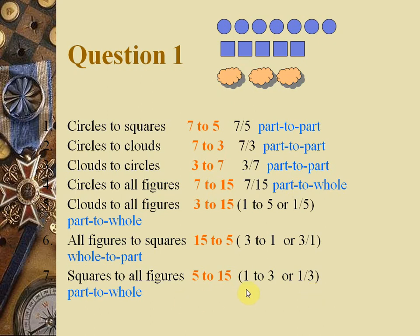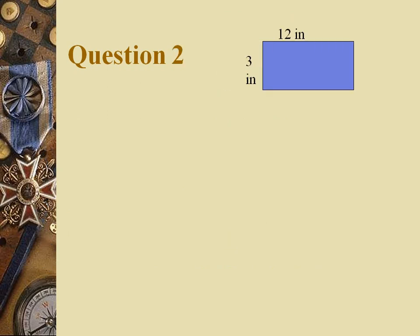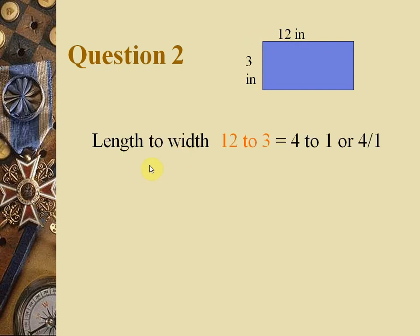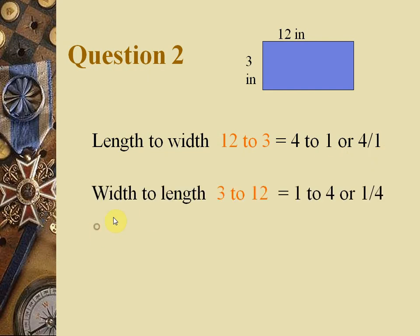Always simplify your ratio answers to get full marks. Question 2 is a geometry question. The width of a rectangle is 3 inches and the length is 12 inches. Length to width: 12:3 simplifies to 4:1. Width to length: 3:12 simplifies to 1:4 — the width is one unit while the length is four units.